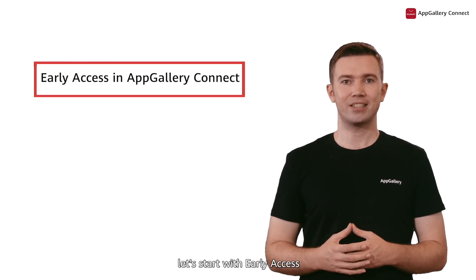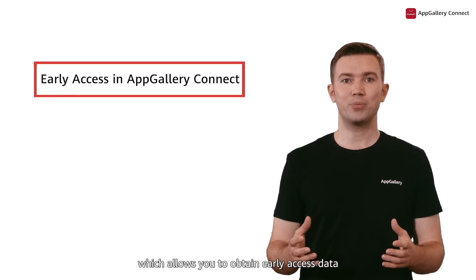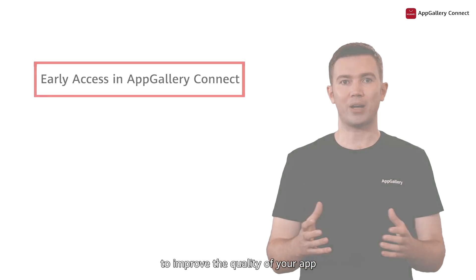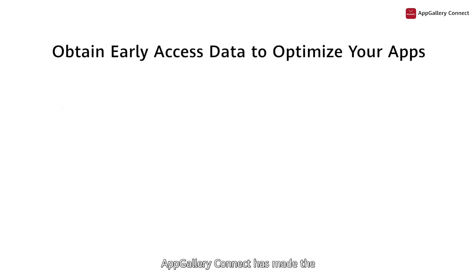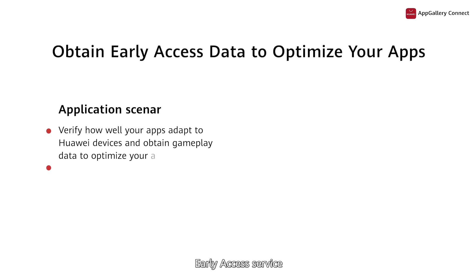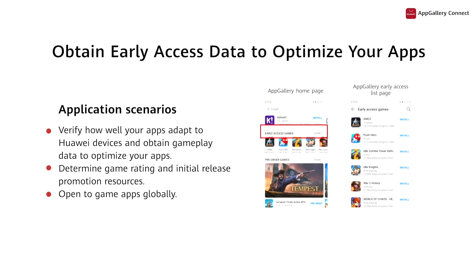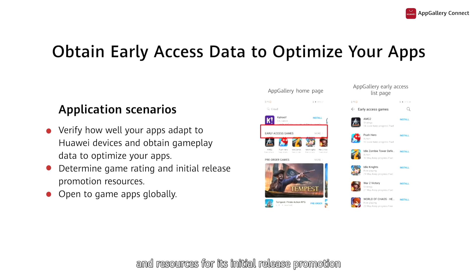First, let's start with early access, which allows you to obtain early access data to improve the quality of your app. AppGallery Connect has made the early access service available globally to game apps. Based on the early access data, Huawei can determine your game's ratings and resources for its initial release promotion.